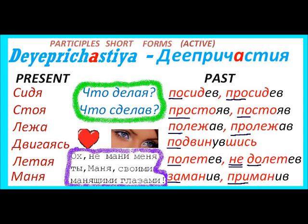For example: полежав часок — он продолжал работать — having lied down for an hour, he continued working. Or пролежав весь день — он ничего не сделал — having been lying down all day long, he hasn't accomplished anything. So this will be деепричастный оборот — a short participial construction, the same as in English. In English it will be perfective, and in Russian it will be the past form of деепричастие.